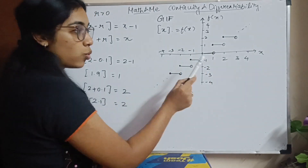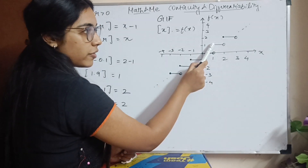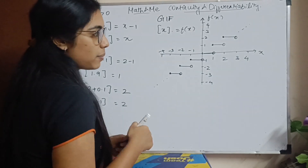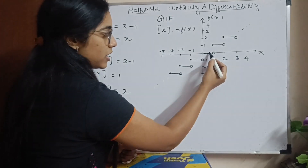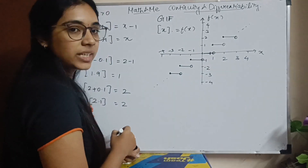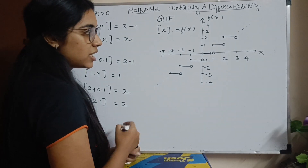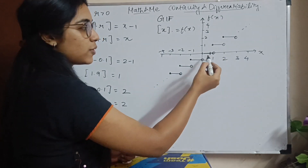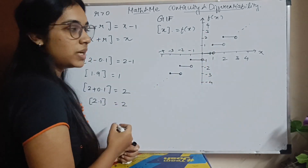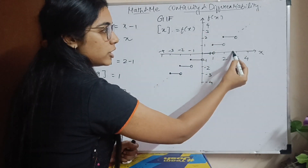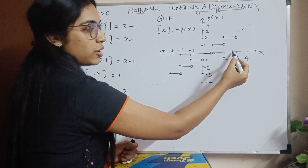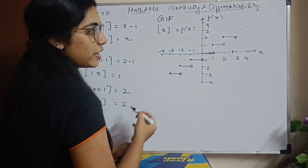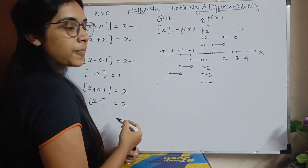When x is equal to 1, the value of f of x becomes 1. Even when x is somewhere like 0.9, my value is still going to be 0 — f of x is 0 when x equals 0.9. Similarly, when x equals 2.7, the value of f of x is going to be 2.